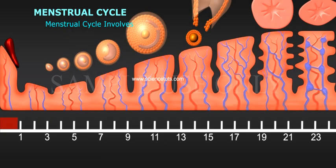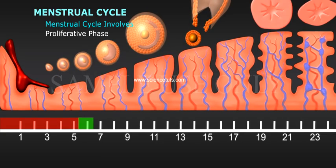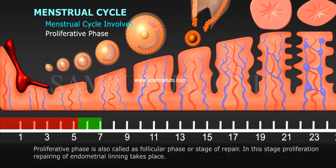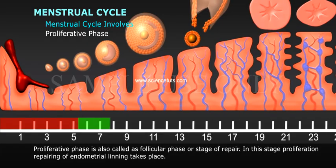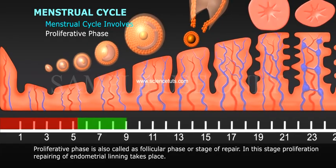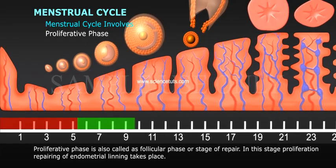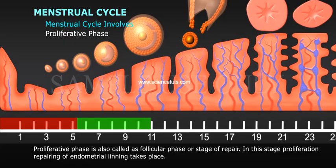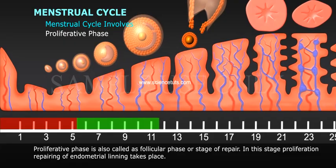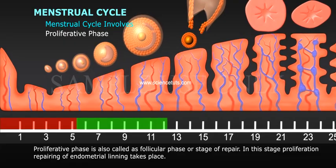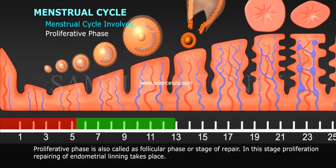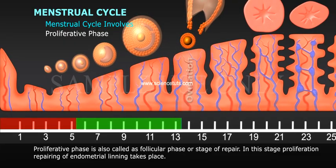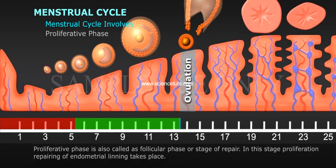The menstrual cycle involves a proliferative phase, also called the follicular phase or stage of repair. In this stage, proliferation and repairing of the endometrial lining takes place.